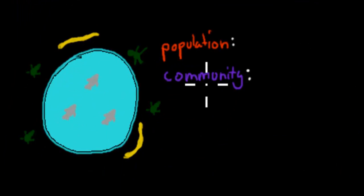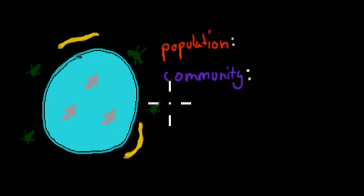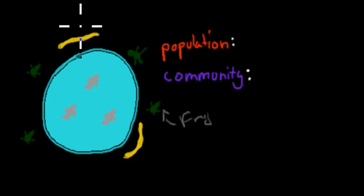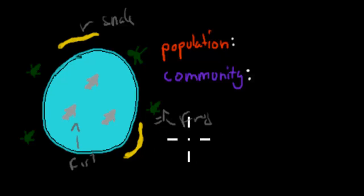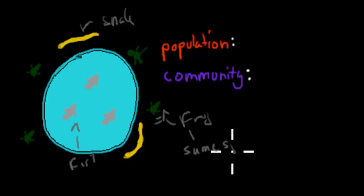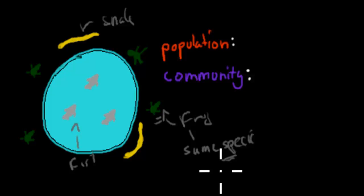So, what is population? You can imagine this pond, somewhere in Australia. We find frogs here, snakes, and fish inside. These frogs happen to be the same species — they're so similar that they can breed and have fertile offspring. That's the definition of a species.